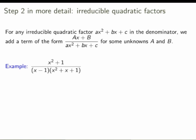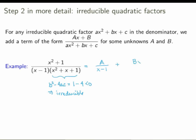The second case is when you have irreducible quadratic factors. For any irreducible quadratic factor in the denominator, you add a term whose numerator is itself a linear expression with two unknowns, like bx plus c over the quadratic factor. You can verify irreducibility by checking that b squared minus 4ac is less than 0. If it's not irreducible, you must write it as a product of two linear factors. It's important to check whether the factor is irreducible.